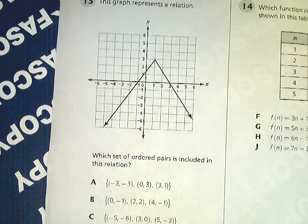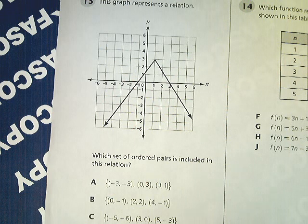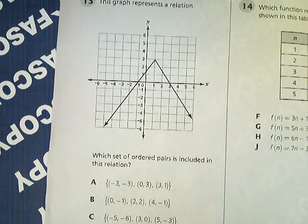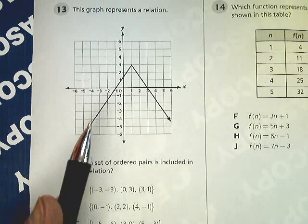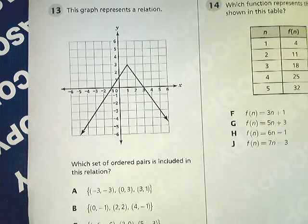Tennessee Algebra 1 End of Course Practice Test question number 13. Which set of ordered pairs is included in the relation? All you have to do is find these points and then find the ones that all three of them are in the equation.